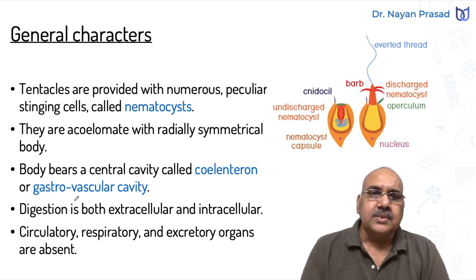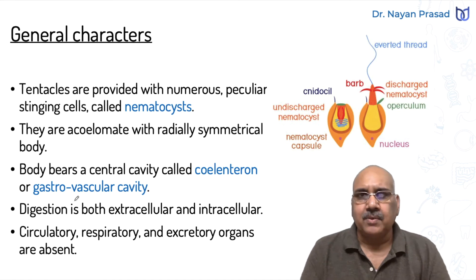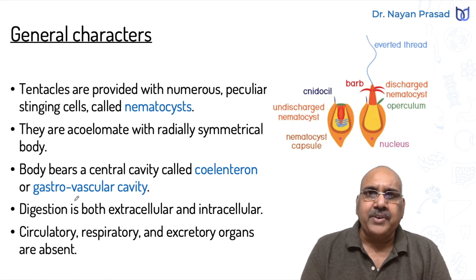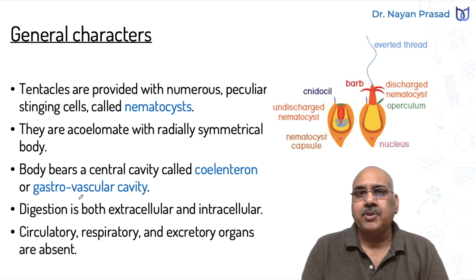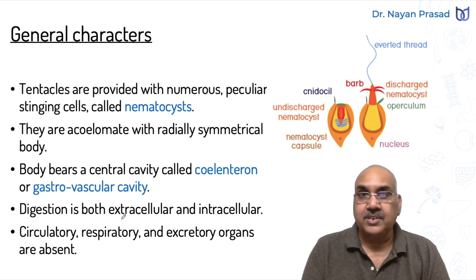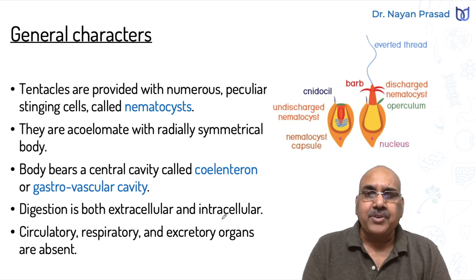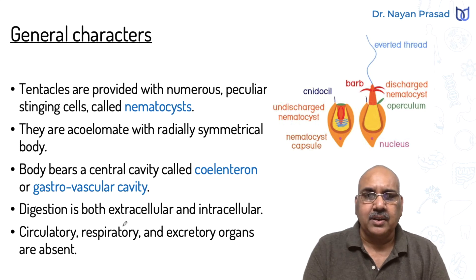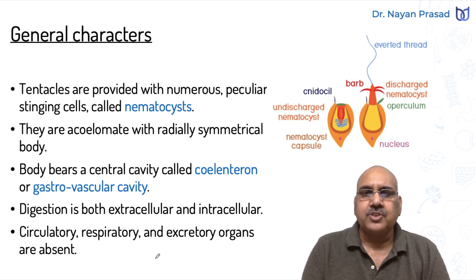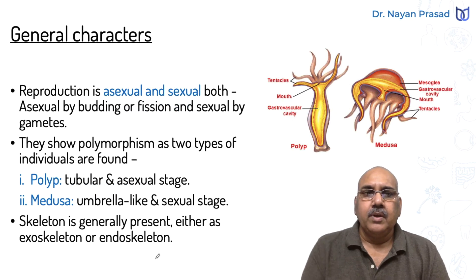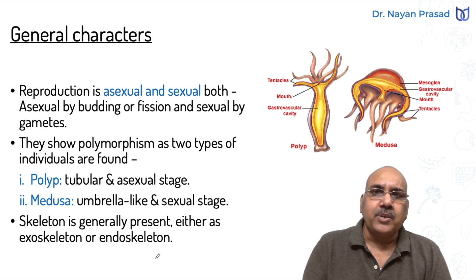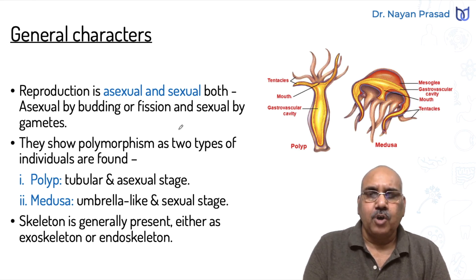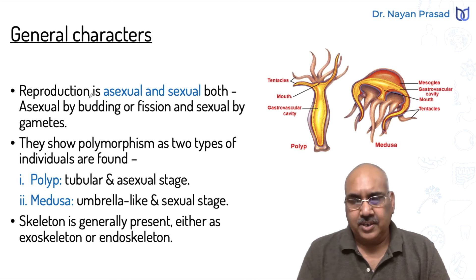In these individuals, digestion is both extracellular and intracellular. Some food materials are digested inside the gastrovascular cavity (extracellular), while some nutrients are ingested by body cells and digested inside the cell (intracellular). Circulatory, respiratory, and excretory organs are absent. Respiration takes place through the general body surface, and excretion of materials occurs through a single opening.